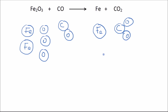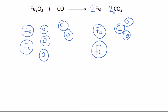So what do we do? The easiest thing is to balance the irons first. We have two on the left and one on the right, so we put a coefficient of two in front of the iron on the right. Now we have two iron atoms on both sides — great. But we still have to balance the oxygens: four on the left and two on the right. We could multiply the carbon dioxide by two, giving us four oxygens on the right and two carbons — but now we have two carbons on the right and only one on the left.